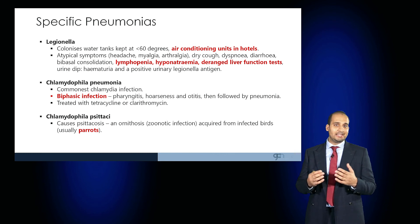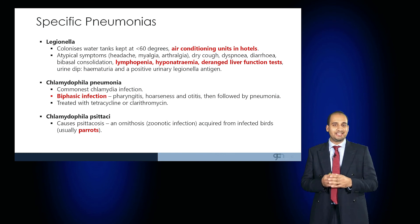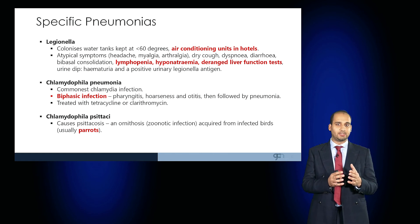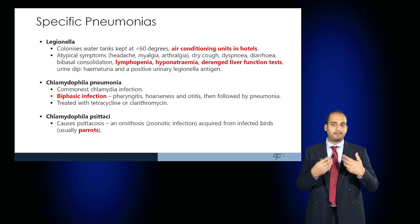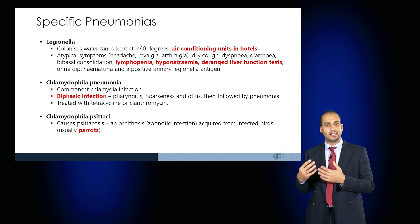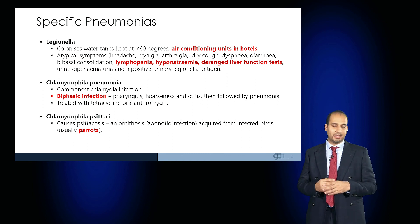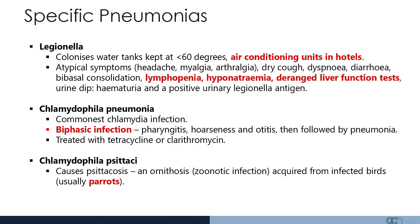Chlamydia is an atypical pneumonia that usually causes a biphasic infection — initially a pharyngitis, hoarseness and otitis, then followed by a pneumonia. These atypical infections are usually treated with tetracyclines or clarithromycin. Chlamydophila psittaci, or psittacosis, is an ornithosis or zoonotic infection acquired from infective birds, usually parrots, again requiring treatment with clarithromycin or tetracycline.